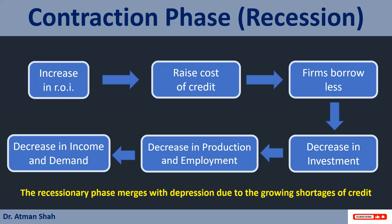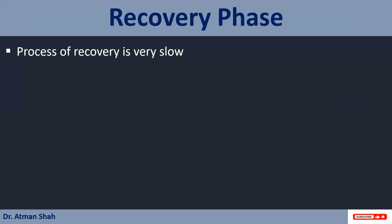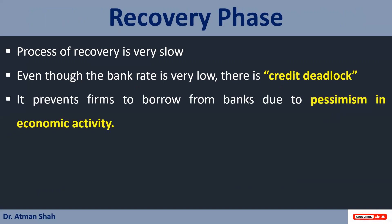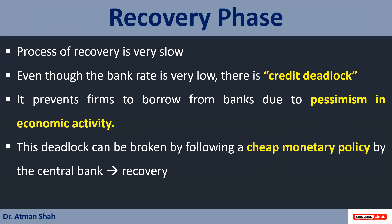Now this recessionary phase merges with depression due to the growing shortages of credit. In the recovery phase, the process of recovery is very slow, and even though the bank rate is very low, there is a credit deadlock. That means it prevents firms from borrowing from the banks due to pessimism in economic activity. So lowering the interest rate will not help to recover the economy quickly. This deadlock can be broken by following a cheap monetary policy by the central bank, which in turn helps the economy to recover from the recession.